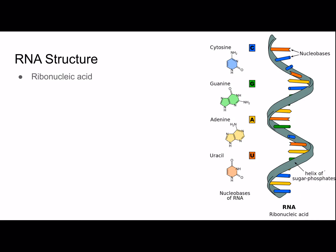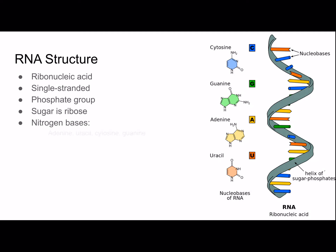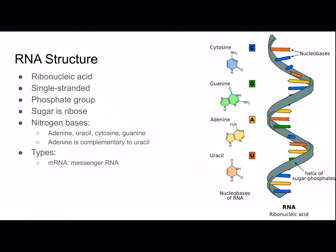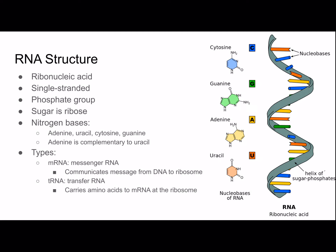RNA is ribonucleic acid — it's single stranded, has a phosphate group, and the sugar is ribose. The nitrogen bases are adenine, uracil, cytosine, and guanine — so instead of thymine, we have uracil, and adenine is complementary to uracil; cytosine and guanine still pair together. There are three types of RNA: mRNA (messenger RNA) communicates the message from DNA to the ribosome; tRNA (transfer RNA) carries amino acids to mRNA at the ribosome; and rRNA (ribosomal RNA) makes up the structure of ribosomes along with proteins.